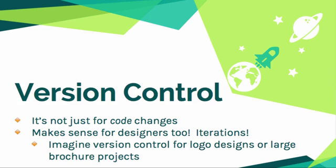If you've done any kind of design, I always tend to think of logo designs. Anything you have that has iterations — anything where you've got version one, version two, version three, final version one, final version two, final version three, as the joke tends to go — then you can use version control for those things because it's not just for code, it's for any file. So if you're a logo designer, it's probably going to make sense for that. I also like to think of it in terms of a large brochure project, something where you're likely to have several variations of what happens over time.